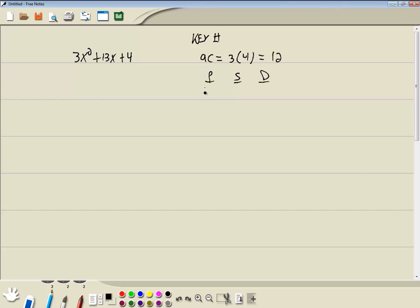We're going to write down all the products that give us 12. We got 1 times 12, 2 times 6, 3 times 4. In the S column, we want to add those together. 1 plus 12 is 13, 2 plus 6 is 8, 3 plus 4 is 7.